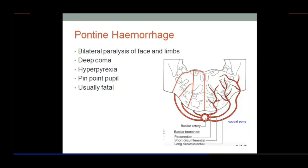The dilator pupillae fibers ascend: T1 to T4 preganglionic fibers pass out of the sympathetic chain and reach the superior cervical ganglion. From there, fibers climb along the internal carotid artery into the orbit via the ophthalmic artery, and through the long ciliary nerves they supply the dilator pupillae.